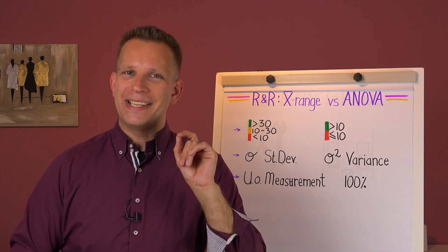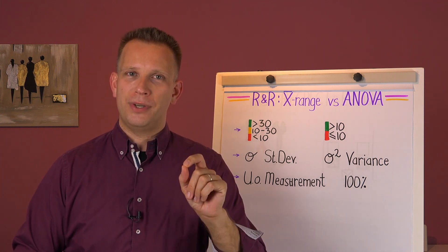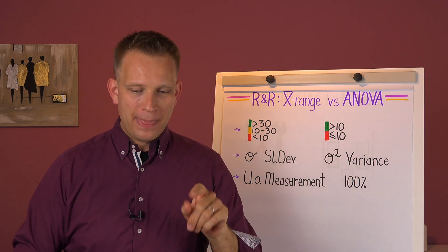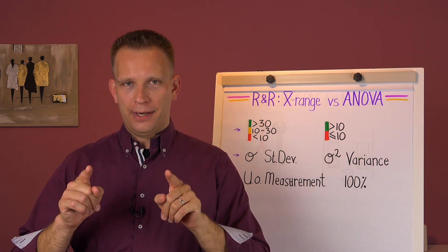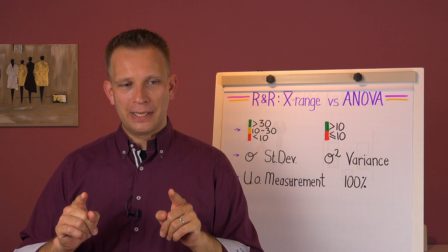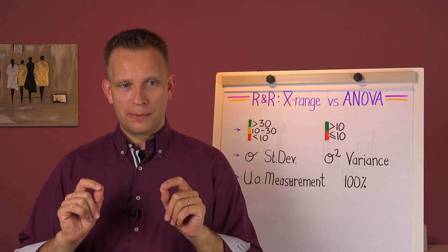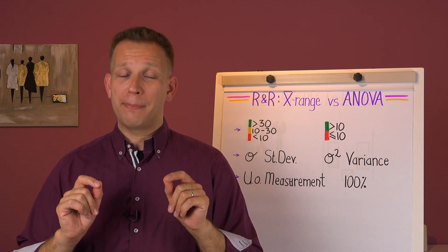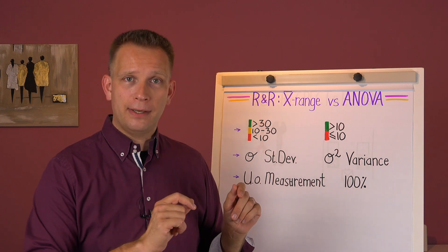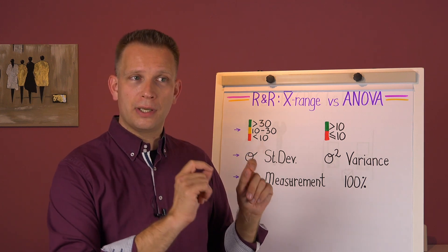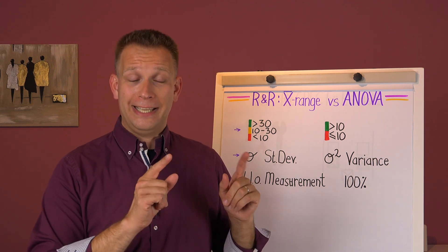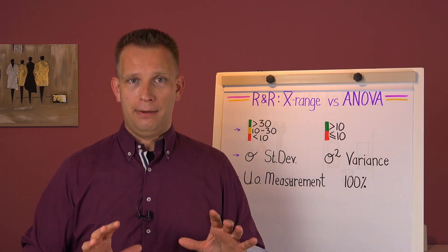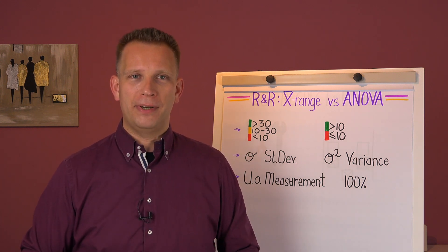But that is an absolutely incorrect conclusion. In fact, 10% on the ANOVA method is generally worse, well maybe not worse, but it's about the same as 30% on the average and range method. 10% on the average and range method is way better than 10% on the ANOVA method.